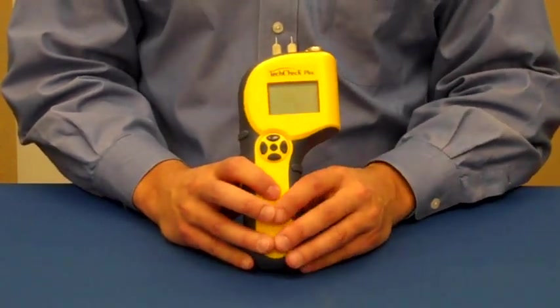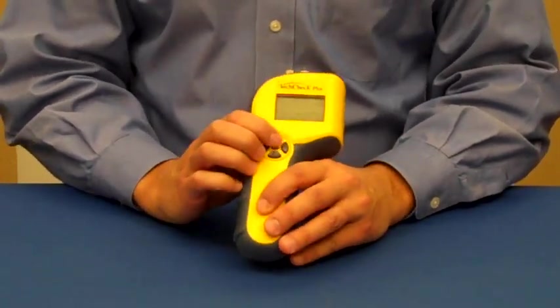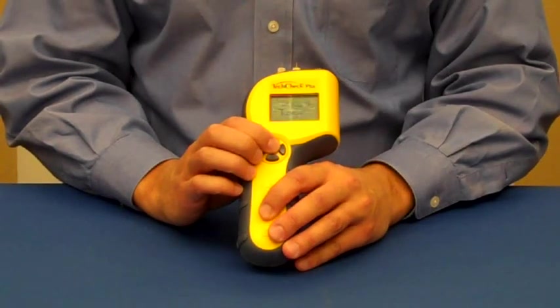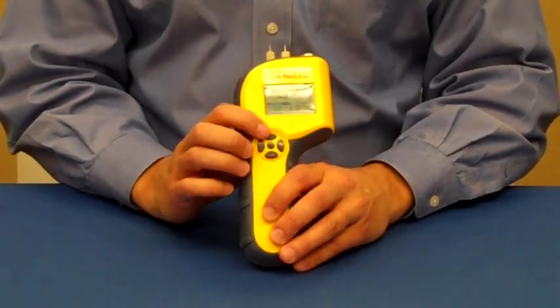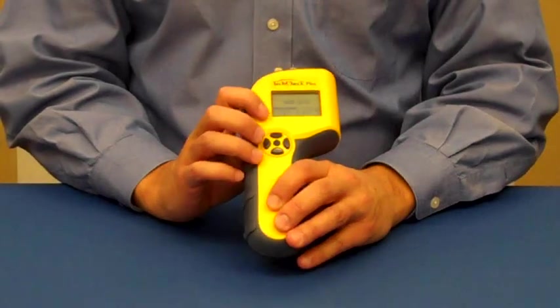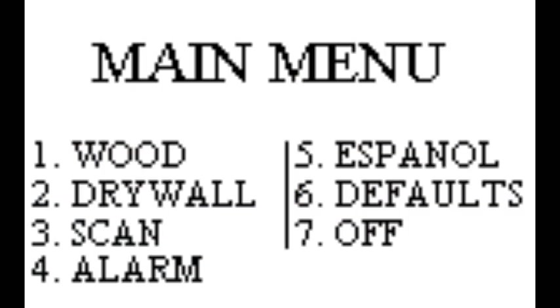The meter is easy to use. It features a menu-driven display, which is controlled by these five buttons on the face of the unit. In the menu, you can choose a wood scale that reads from 5 to 60% moisture content, a drywall scale that reads from 0.1 to 6% moisture content, or the scanner, which reads from 0 to 300 on a relative or comparative basis.